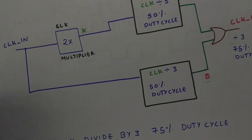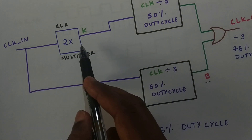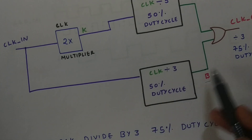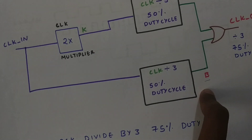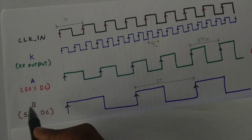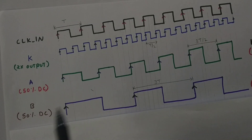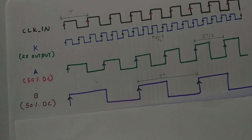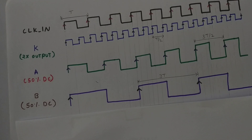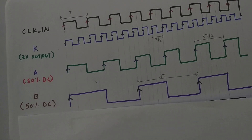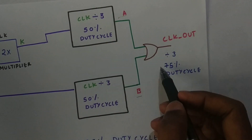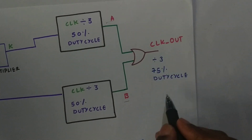We've completed the path from clock-in through the 2x multiplier to K, then through clock-divided-by-3 to A. Now let's look at B. Clock-in is fed directly to a clock-divided-by-3 with 50% duty cycle, giving output B with time period 3T and frequency divided by 3. Both A and B are fed into an OR gate to produce clock-out with 75% duty cycle.